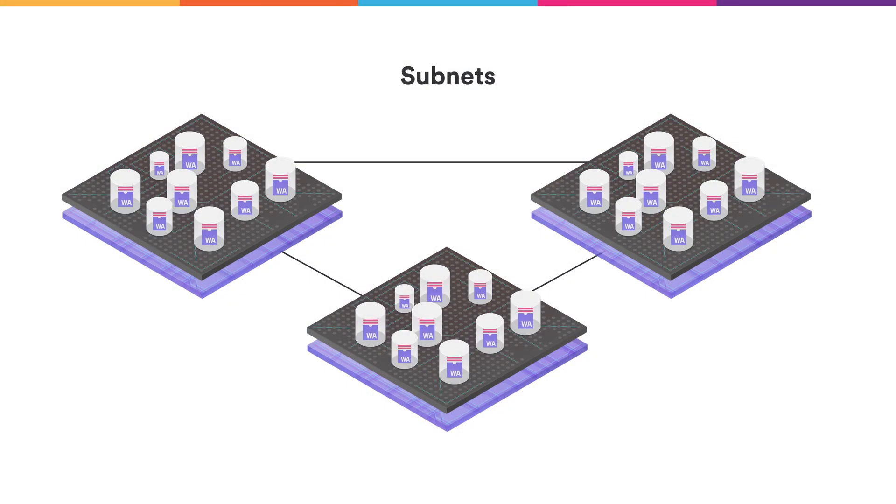Additionally, we want the internet computer to scale, meaning we can run more and more canisters on the internet computer and it can grow its capacity. To achieve these goals, we have what we call subnets. We split the canisters into smaller groups, and each group will run on a subnet. We can always add subnets to the internet computer, thereby growing its capacity.